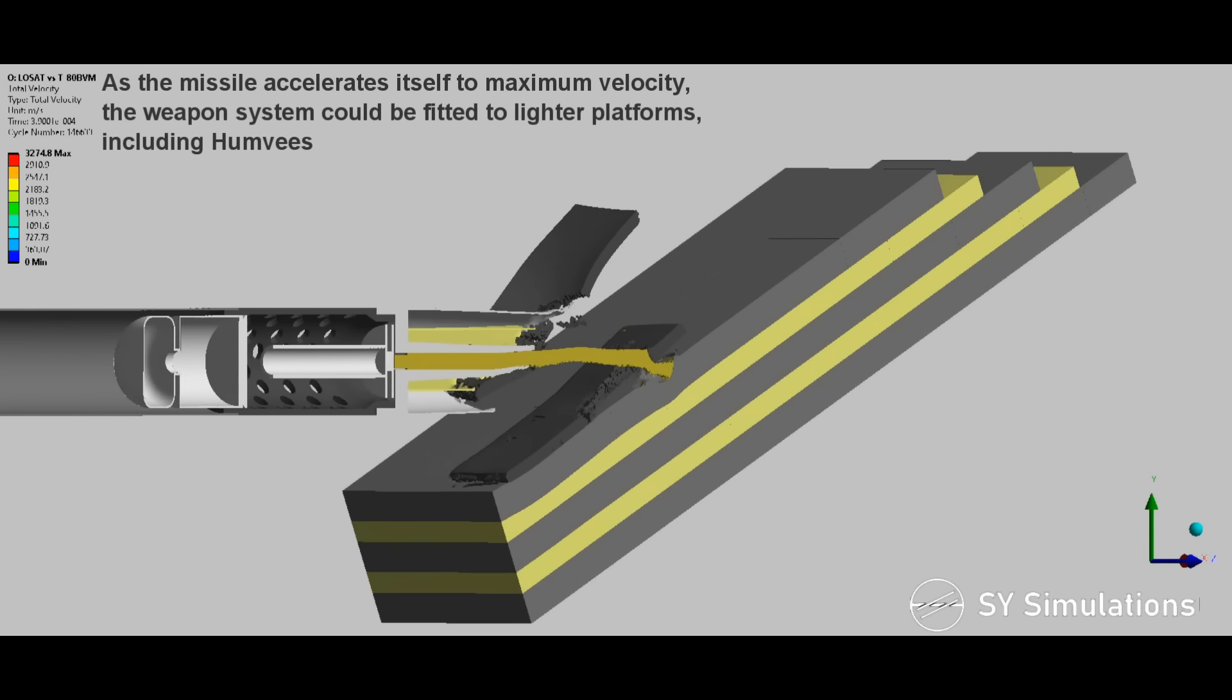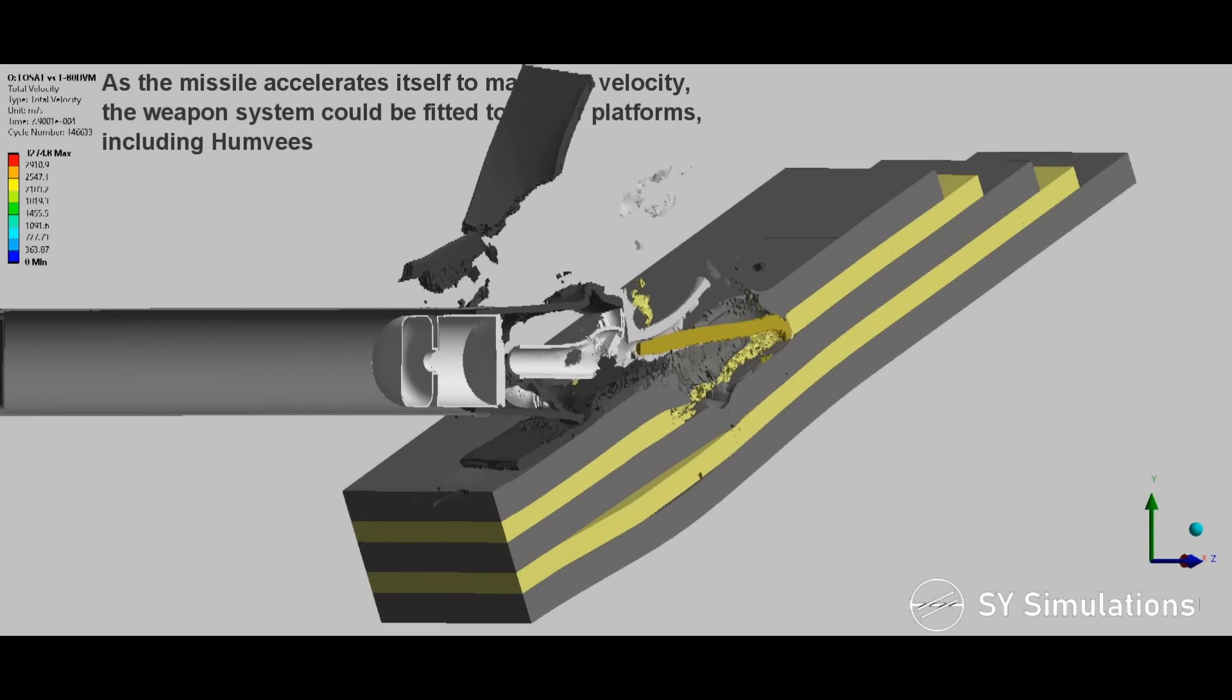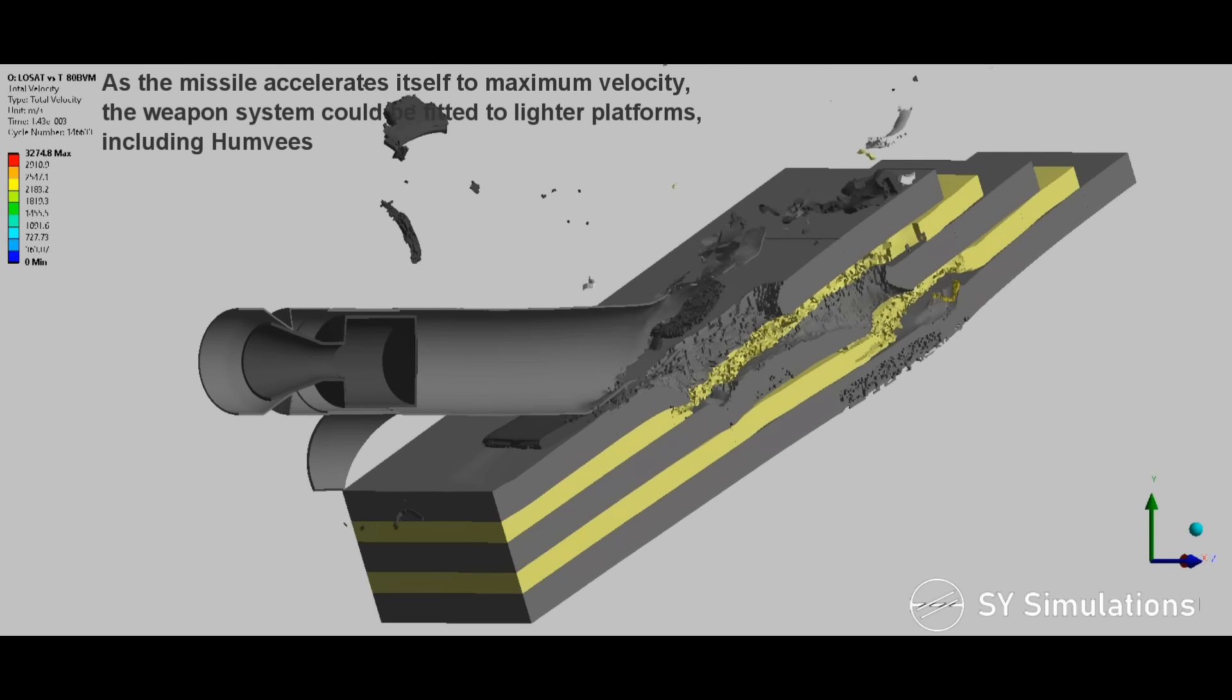As the missile accelerates itself to maximum velocity, the weapon system could be fitted to lighter platforms, including Humvees.